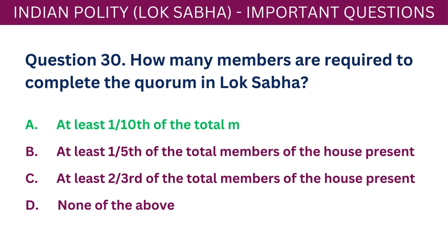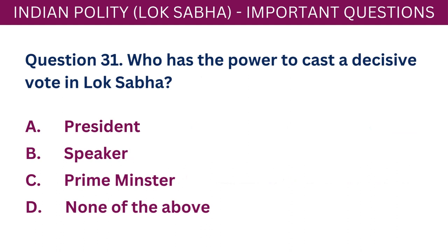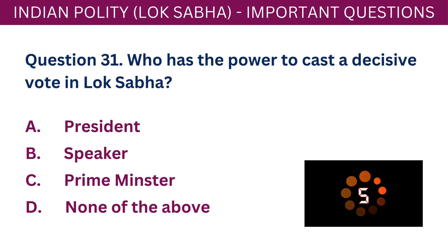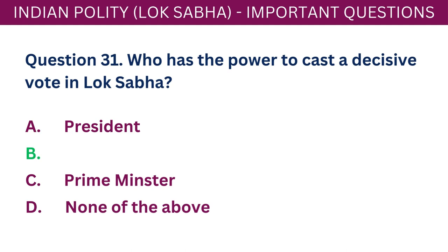Question 31: Who has the power to cast a decisive vote in Lok Sabha? A. President. B. Speaker. C. Prime Minister. D. None of the above. The correct answer is B - Speaker.